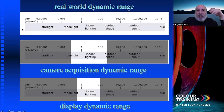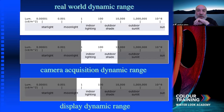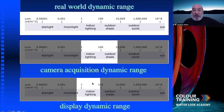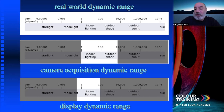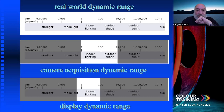Real-world dynamic range is massive — from the darkest thing going into a dark closet to going outside and looking up at the sun. Cameras and image capture devices can only capture a certain amount of that. DPs decide what part of the real world's dynamic range their limited capture device is going to capture. Down here we have the display device — film projected in a theater, a TV at home, or streaming — and that shows even less dynamic range. We'll leave the whole question of HDR aside for this presentation.